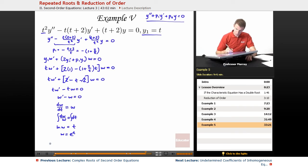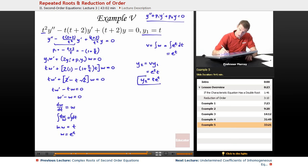And remember, from there, we try to find v, which is the integral of w, which is the integral of e^t dt, which in this case is just e^t itself. And finally, our y₂, remember, is v times y₁. That's always the formula. You can look that up in the lesson overview at the beginning of this lecture. So, v times y₁ is e^t times t, and I'll write that a little nicer as te^t. So that is our second solution to the differential equation.